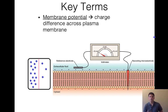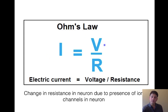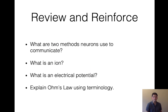Ohm's law is I equals V over R, where I is electric current, V is voltage, and R is resistance. If we increase resistance, it reduces our electric current; if we increase voltage, it increases electric current. Changes in resistance in the neuron are due to the presence of ion channels — those are what allow more ions in or out of the cell, which changes our voltage and electrical currents. Pause the video, practice a little bit, and I'll see you in a second.